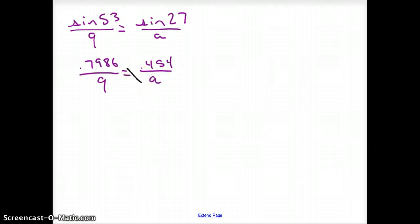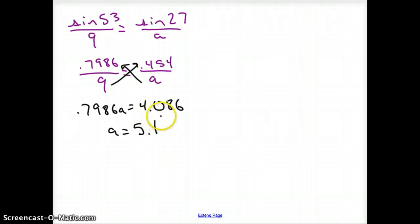We cross multiply here. So, it is 0.7986 times a. That equals 9 times there to be 4.086. We now divide. So, a turns into 5.1 for our side.